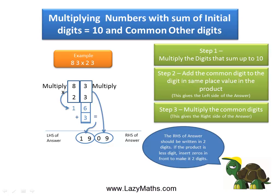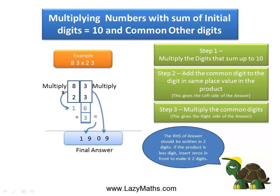So the final answer is a combination of the left and right-hand side of the answer, and we get 1909 as the final answer. So 83 times 23 is 1909.